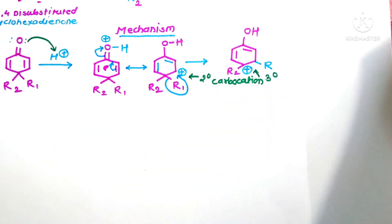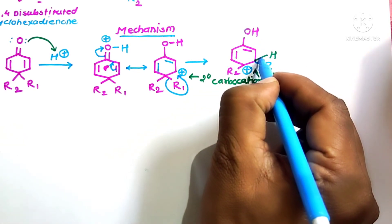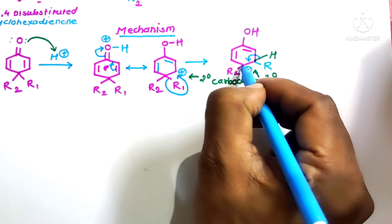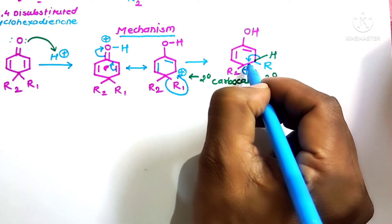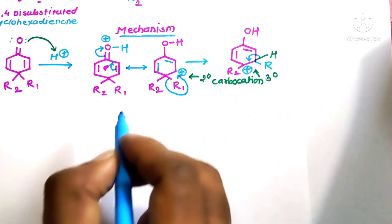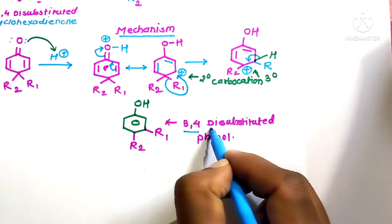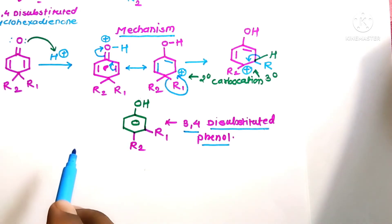In the last step, the hydrogen-bonded electrons shift toward the electron-deficient carbocation, converting a single bond to a double bond. This is the aromatization of the ring nucleus, forming the final product — 3,4-disubstituted phenol.